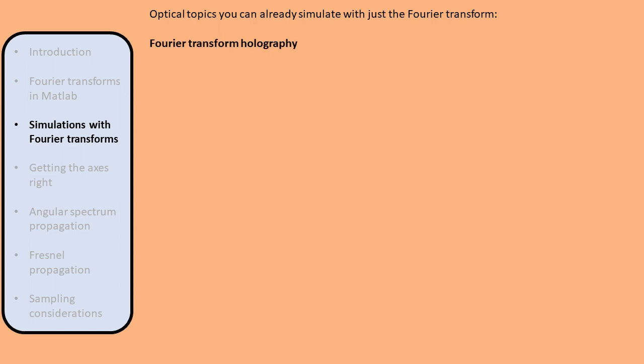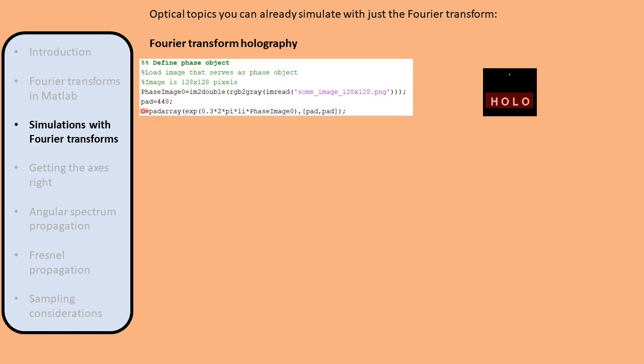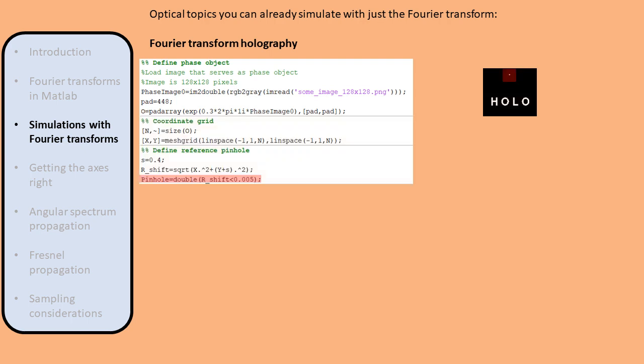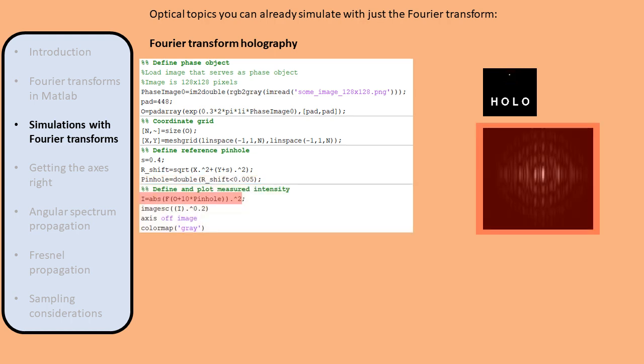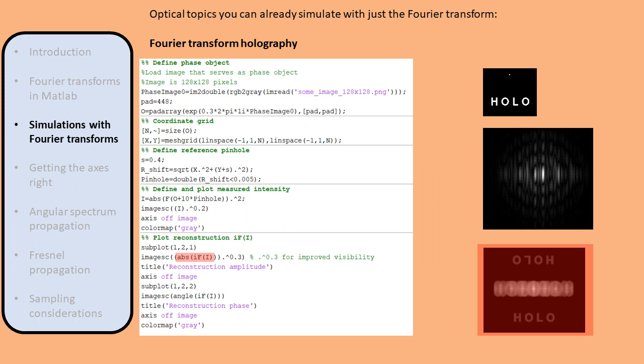For example, we can simulate Fourier transform holography, which is a form of lensless imaging. We define an object that we want to reconstruct from its far-field intensity, and introduce a pinhole some distance removed from the object. To calculate the far-field intensity, we take the squared modulus of the Fourier transform. To reconstruct the object from this measured far-field intensity, we simply take the inverse Fourier transform. Thanks to the pinhole, we can directly extract the reconstruction of the object.